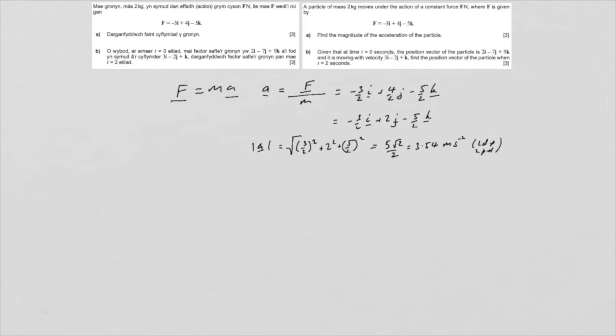Of course that was part A. There is an alternative there, which is just to work out the modulus of F, which is the square root of 3 squared plus 4 squared plus 5 squared, which comes out at root 50, or 5 root 2.